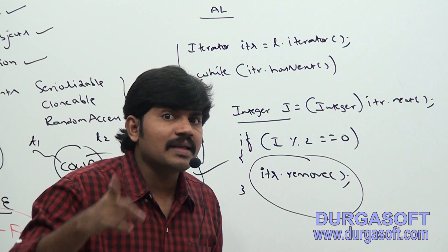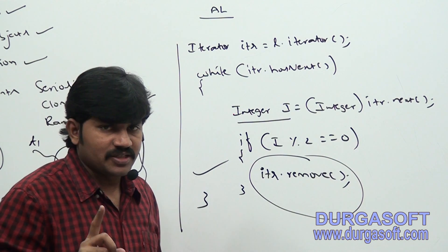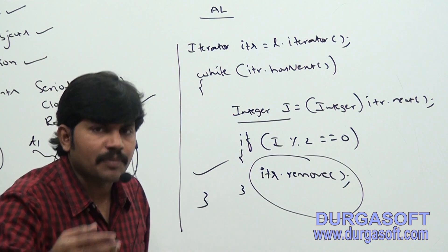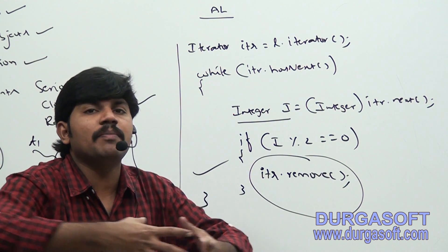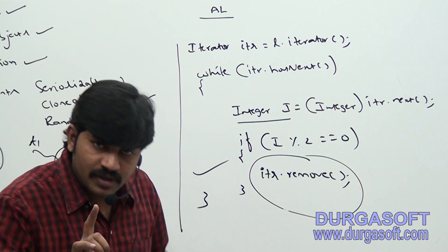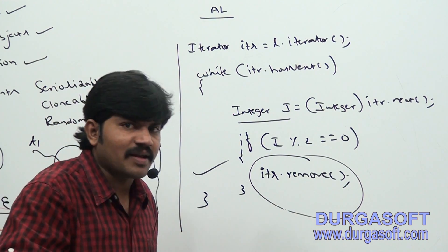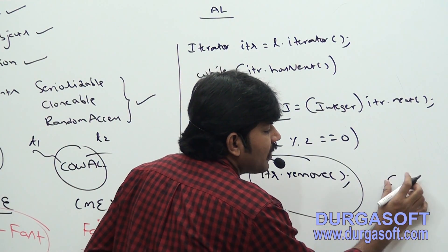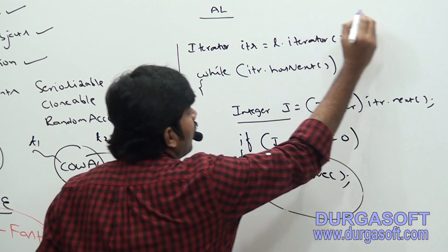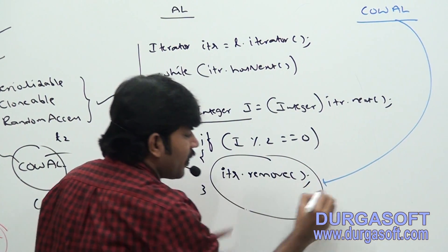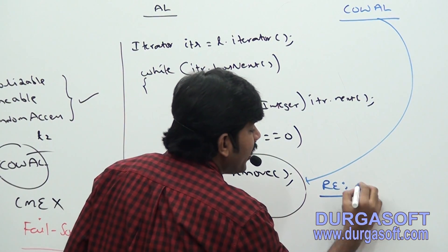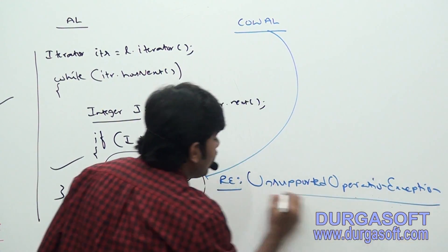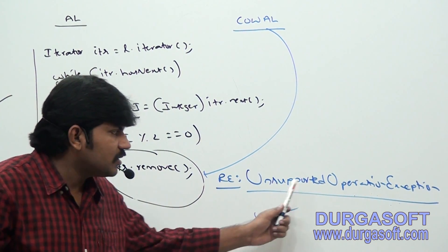But if it is the iterator of CopyOnWriteArrayList, it cannot perform remove operation. Because the remove operation should be performed on a separate clone copy — and performing remove on that clone copy at a later point may cause inconsistency. That's why the CopyOnWriteArrayList iterator cannot perform remove operation. By mistake if you try to, you will get UnsupportedOperationException.